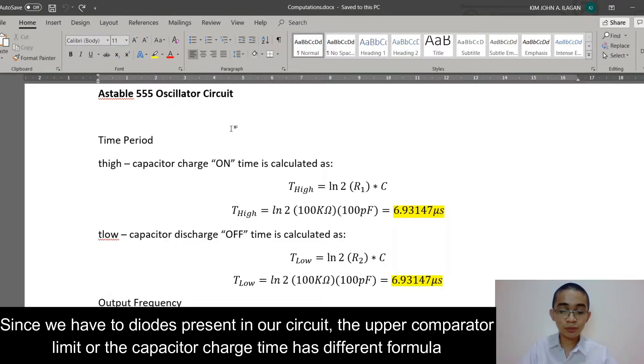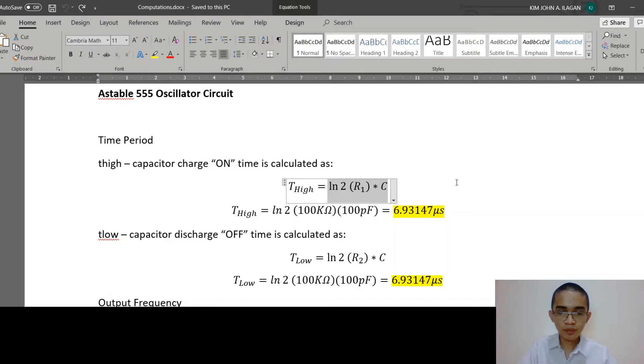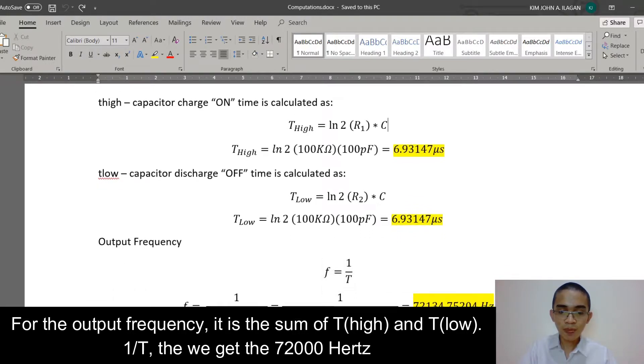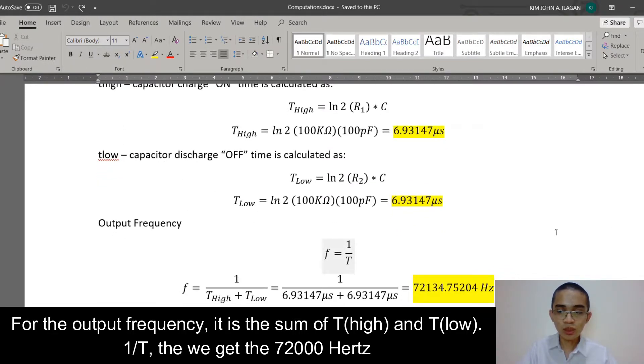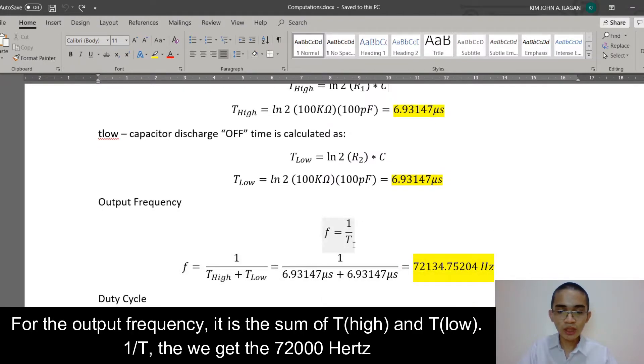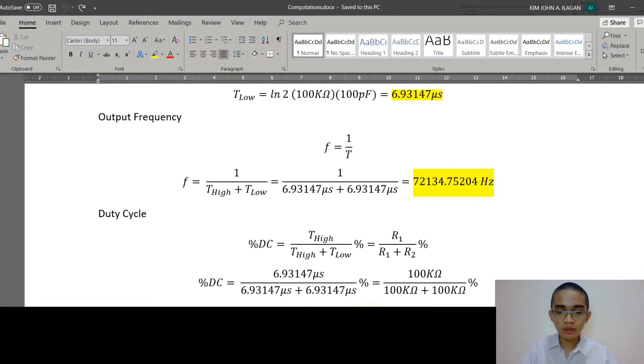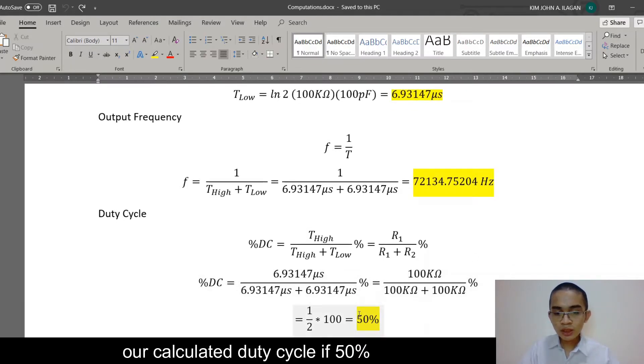Since we have two diodes present in our circuit, the upper comparator limit or the capacitor charge time has different formula. Both T high and T low, we get 6.93 microseconds. For the output frequency, it is the sum of the T high and T low, 1 over T, then we get 72,000 hertz. And for our duty cycle, our calculated duty cycle is 50%.